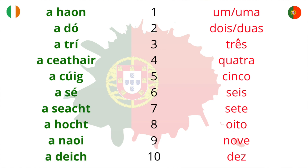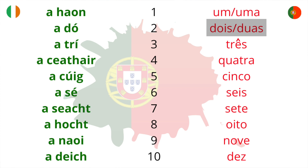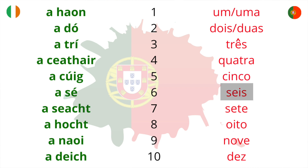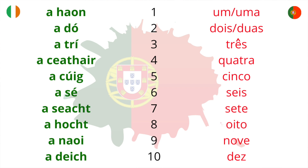Now the Portuguese numbers 1 to 10: um, dois, três, quatro, cinco, seis, sete, oito, nove, dez.